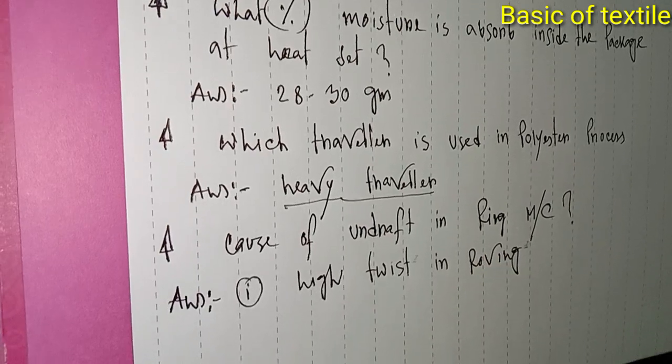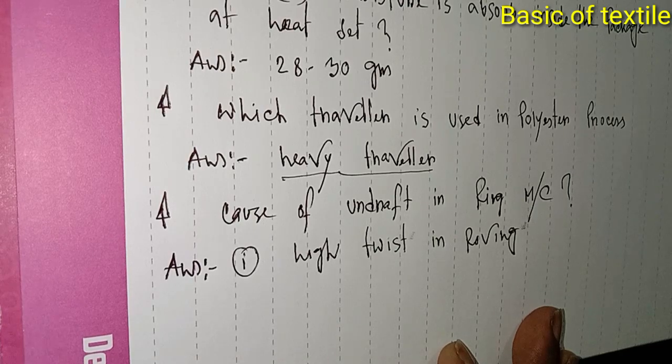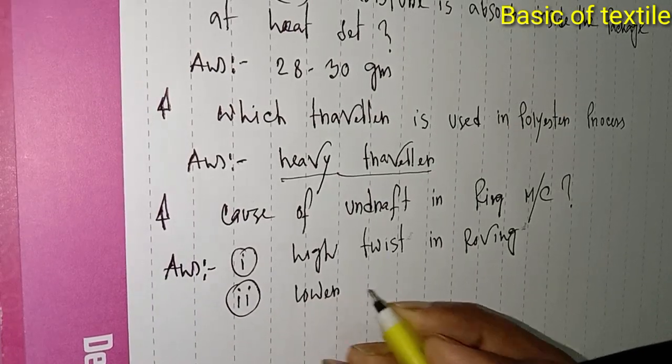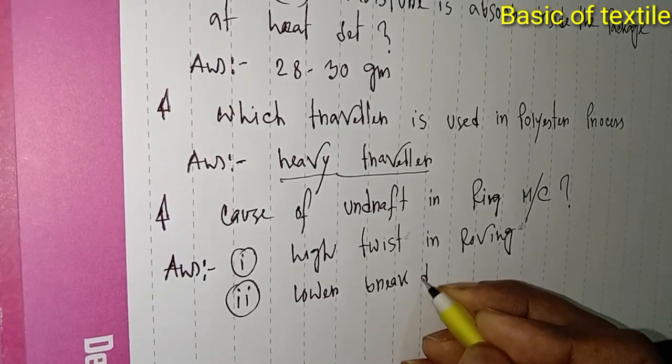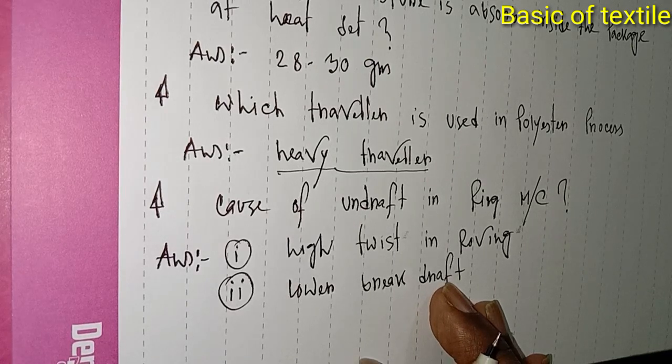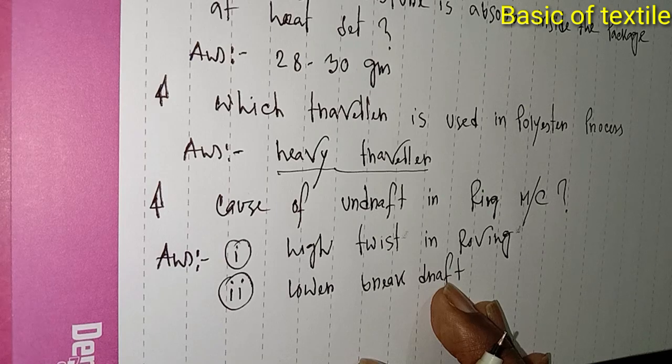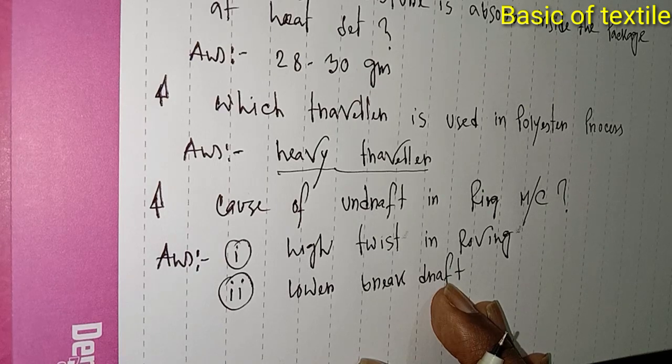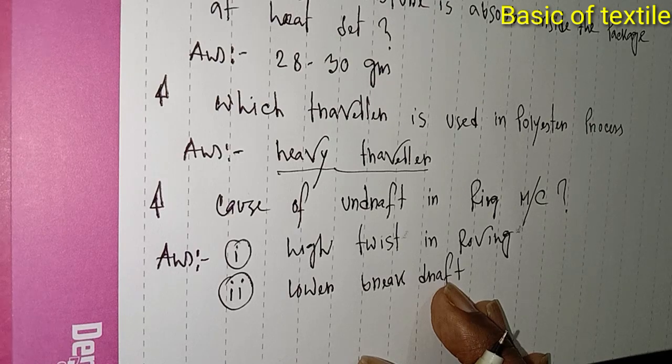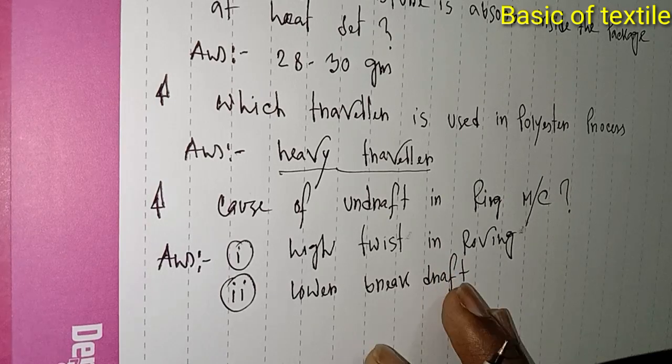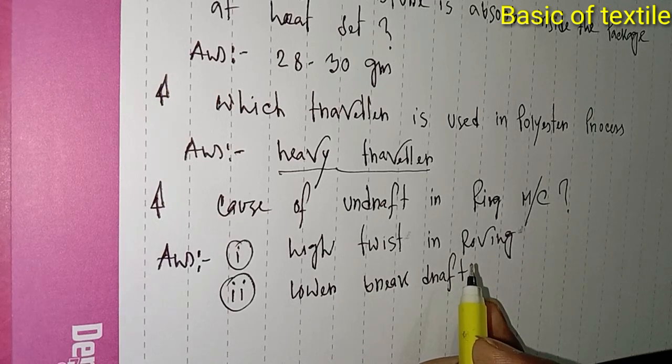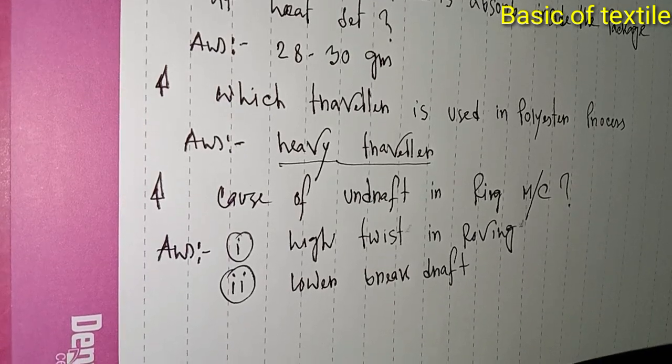Number two is lower break draft. When the break draft setting is too low, around 2.1 to 2.3, instead of the proper setting, this causes undraft. The roving has high twist and the drafting point is not working properly.